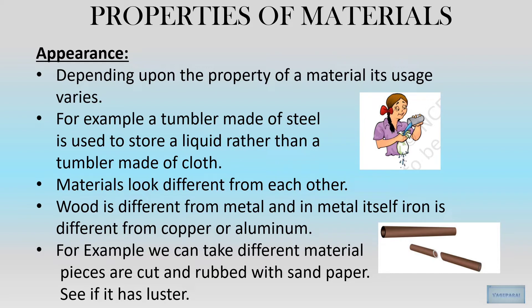First we will see appearance. Depending upon the property of the material, its usage also varies. For example, a steel tumbler can be used to store a liquid, but a cloth tumbler cannot. Materials look different from each other — wood is different from metal, and within metals, copper is different from aluminium.